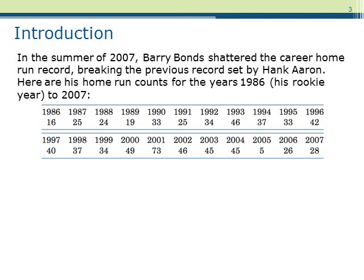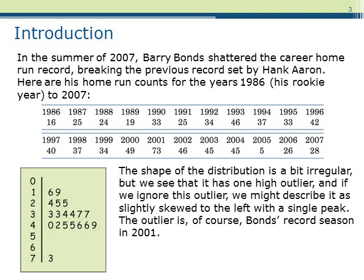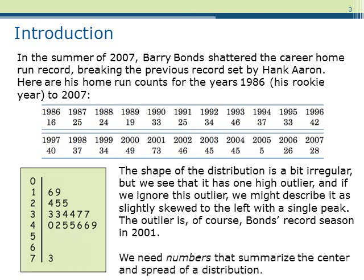Let's look at an example. The following table lists the number of home runs hit by Barry Bonds from 1986 to 2007. If we construct a stem plot for the data, we'd see that the distribution is skewed left. Using the stem plot, we could estimate the center and spread of the data set. In this chapter, we'll discuss how to precisely define quantities that summarize the center and spread using the values in the data set themselves.